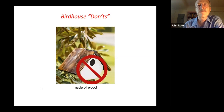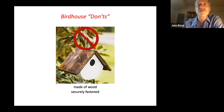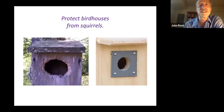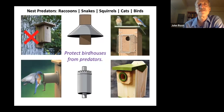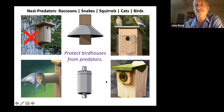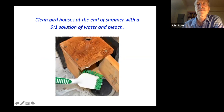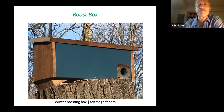If you're going to fasten the bird house to a tree, you definitely need to make sure that no predator can gain access — one of these wire cages or other devices can help protect the bird house. At the end of the summer, please clean your bird house with a nine-to-one solution of water and bleach. Think about offering a roost box, which could be either homemade or purchased. In the cold of winter, birds can gather in a roost box and keep each other warm and stay out of the elements.